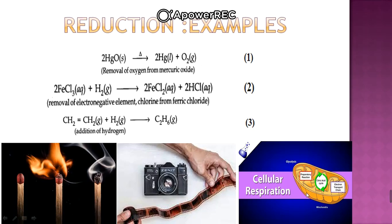Next, moving on to cellular respiration. Where we consume food, it gets converted into energy. In this process, CO2 gets reduced and water gets oxidized from oxygen. So these are the examples from everyday life of the reduction reaction.